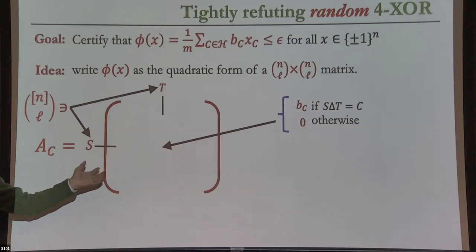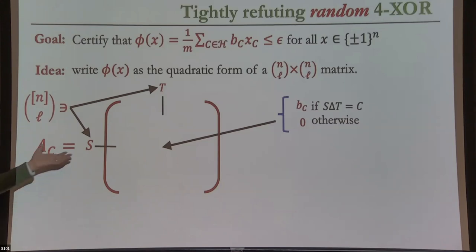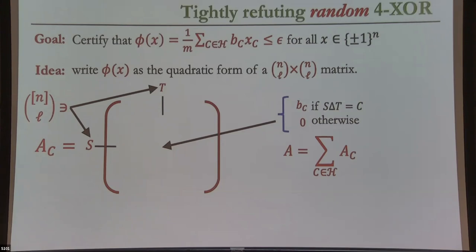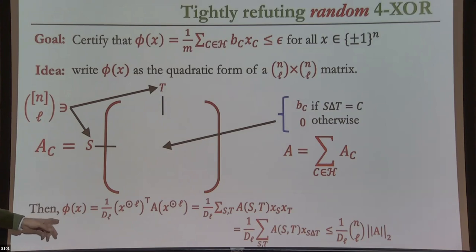Notice this is a rather sparse matrix: even though my sets are of size L, I have a non-zero entry only if they share exactly L-2 variables — i.e., their symmetric difference is a set of size 4. The matrix A_C for a single constraint is defined this way, and to construct the matrix for the whole formula I simply sum up the matrices A_C for each constraint C in the hypergraph H. phi(X) is a quadratic form of this matrix, this time on the vector of L-wise monomials of X.